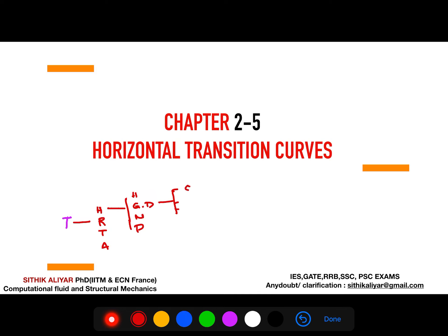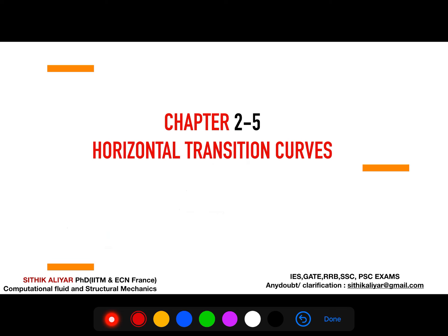If you remember, we have seen the cross-sectional elements, we have seen the sight distance, and we have seen something related to horizontal curves, where we have seen the super-elevation and extra-widening and some problems. We are now going to the next session called Transition Curves.